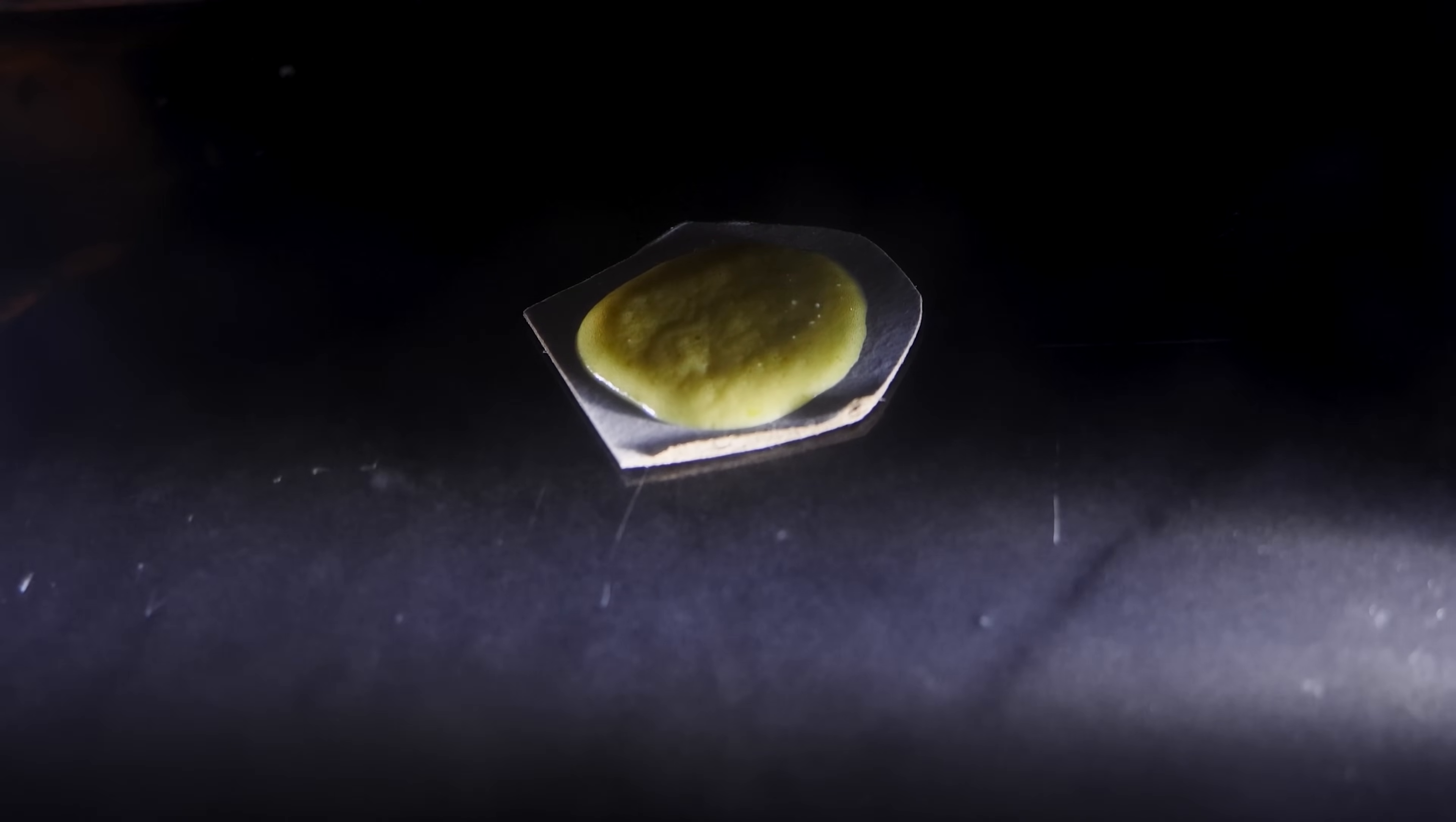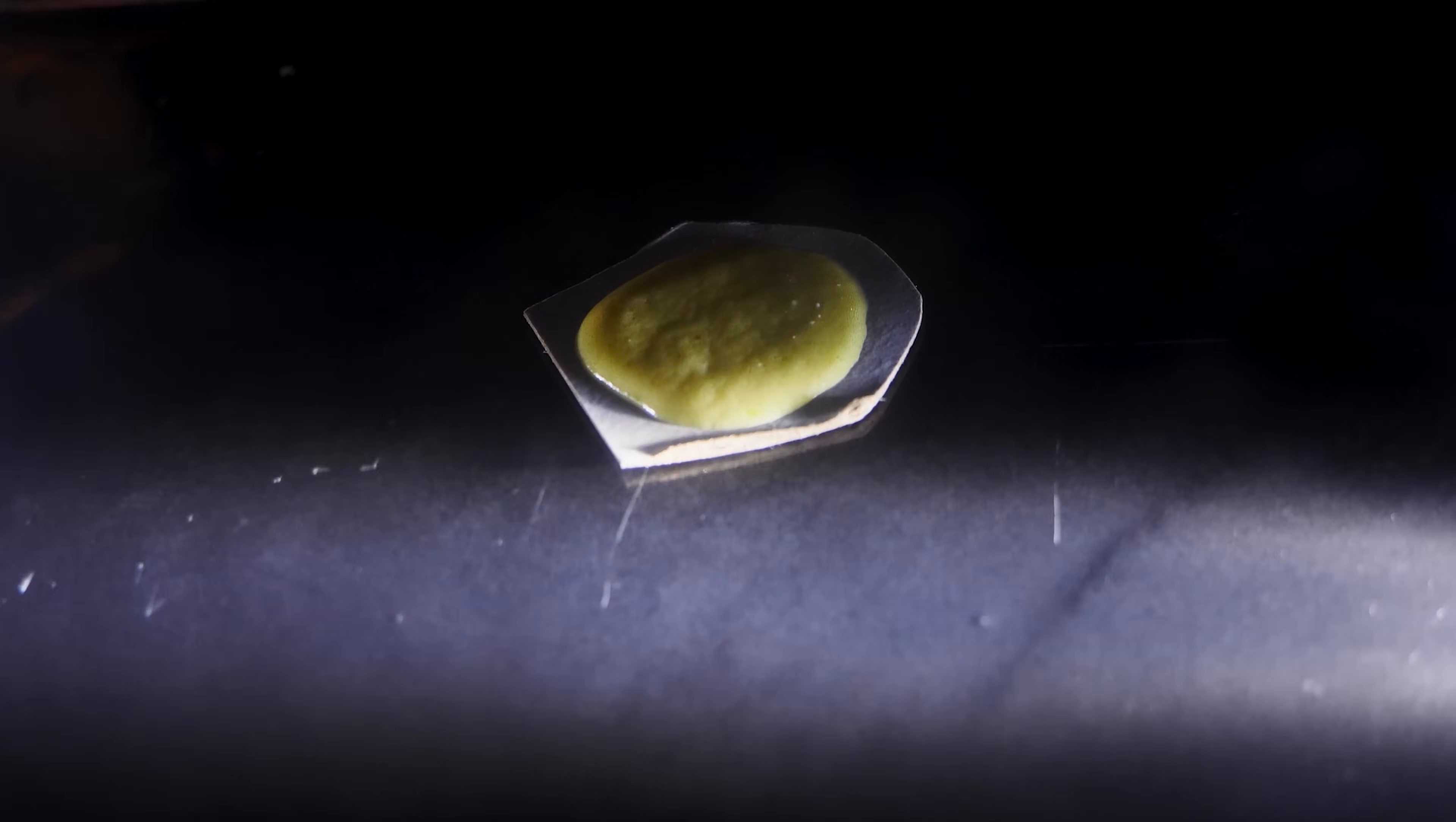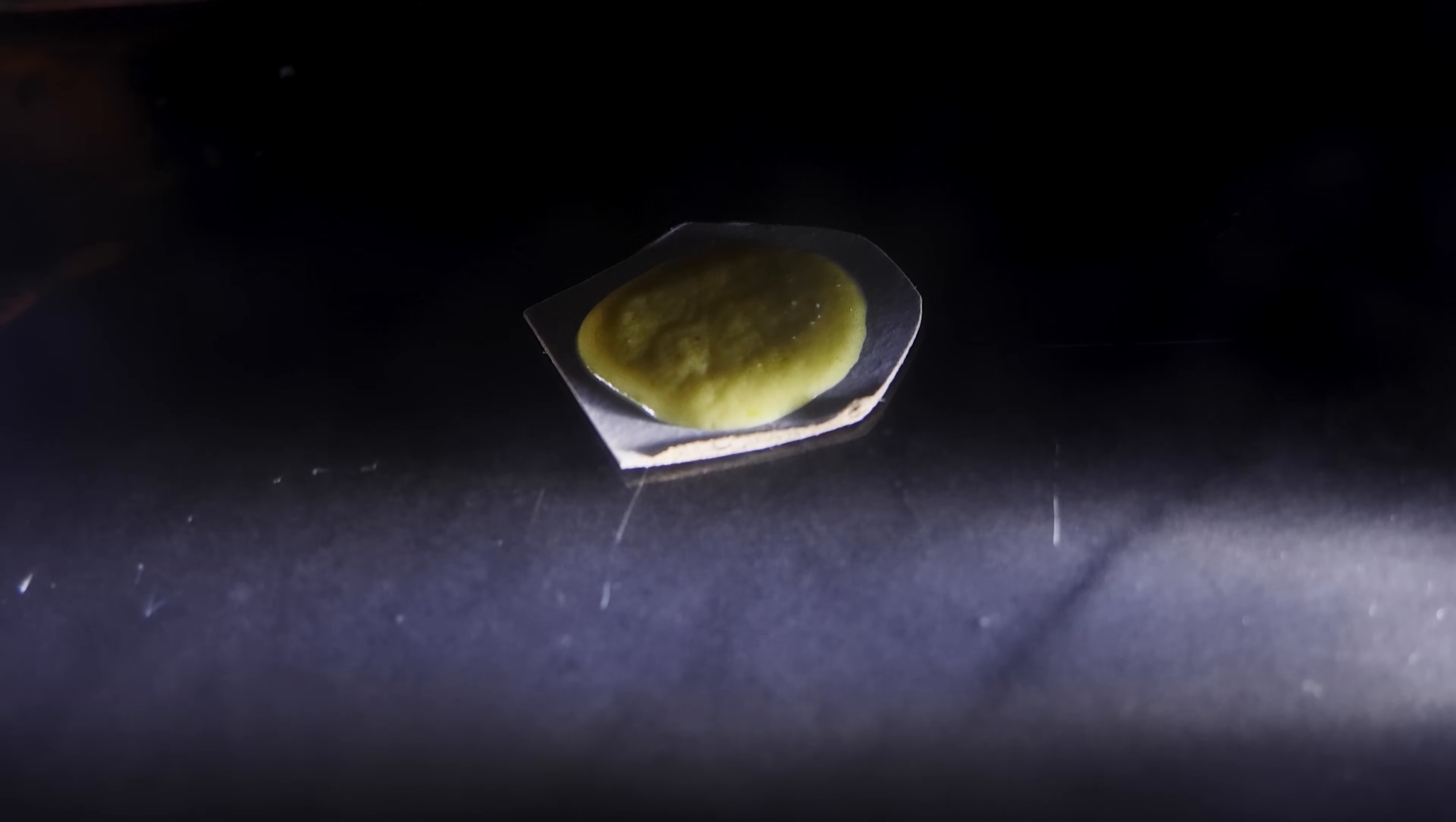So we know that we can see beta particles which are electrons in a cloud chamber. So what would happen if we actually blasted the cloud chamber with billions of electrons. So I'm going to create an extremely high voltage nail that's going to shoot a blast of electrons at the cloud chamber. Let's see what it looks like.